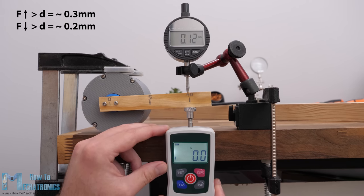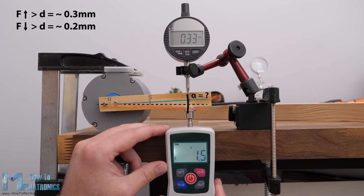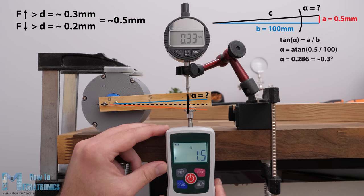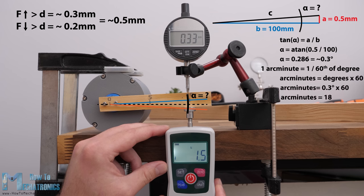To express these measurements in backlash unit, arc minutes, first we need to calculate the angle of displacement, alpha. We do that with the help of some simple trigonometry. And the displacement angle comes out to be around 0.3 degrees. One arc minute is 1 sixtieth of a degree. So, the backlash of this 3D printed planetary gearbox comes out to be around 18 arc minutes.